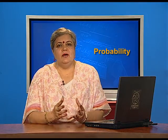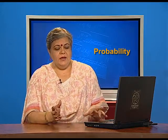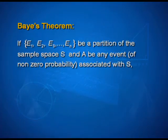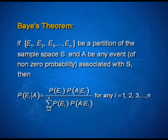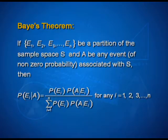Bayes' theorem talks about a sample space being partitioned by events E1, E2, and En, in association with which there is an event A. E1, E2, E3, etcetera are partitions of the sample space. A is any event of non-zero probability associated with S. Then Bayes' theorem says that the probability of Ei given that A has occurred equals the probability of Ei times the probability of A given Ei, divided by the summation of probability of Ei times probability of A given Ei, for i ranging from 1, 2, 3 up to N.